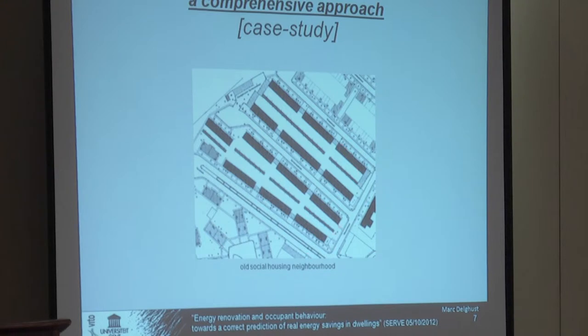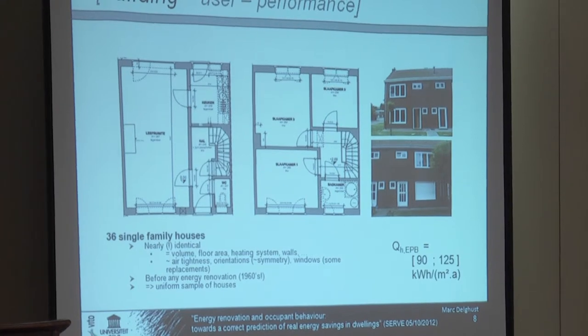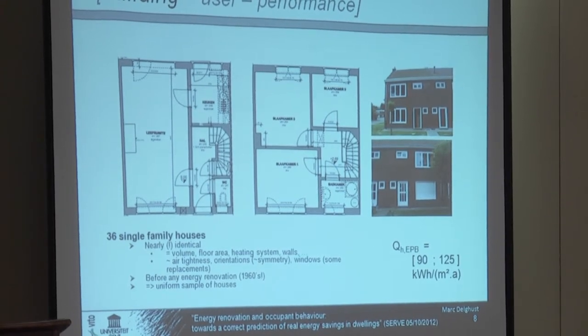I'm going to illustrate with the first case study — an old housing neighbourhood. You see here the master plan. Those black houses were to be analysed; we had about 70 houses — old social housing. To give an idea, this is the plan of the house: on the ground floor we have living room, kitchen, toilet; on the first floor, bedrooms and bathroom. It's a fairly small house, about 80 square metres. They're all nearly identical — they have the same plan. The only small difference is that sometimes someone replaced one window. As only main heating they have one gas furnace in the living room and some additional electric heating in the bedrooms.